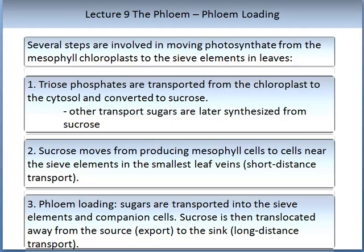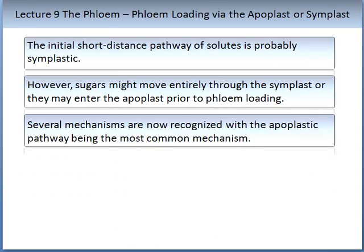In lectures 2 and 3, when we were looking at the root and water and nutrient movements into the root, we learnt about apoplastic and symplastic pathways. The initial short distance pathway of solutes is probably in the phloem symplastic. However, sugars might move entirely through the symplast, or they may enter the apoplast prior to phloem loading. There is some speculation about the exact mechanism, but several mechanisms are now recognised with the apoplastic pathway, which is assumed to be the most common mechanism.